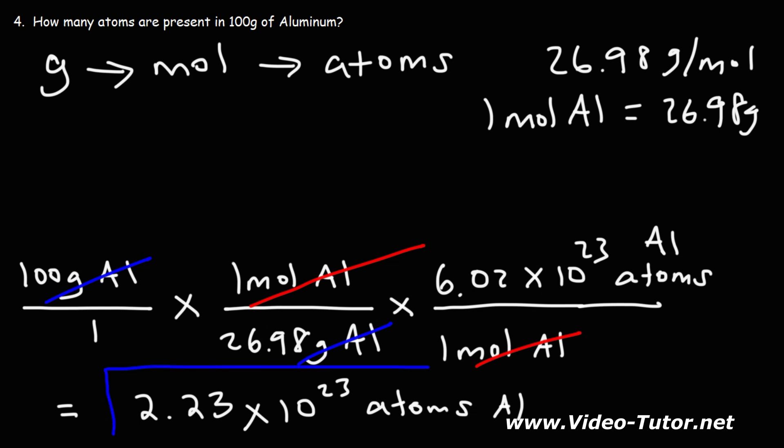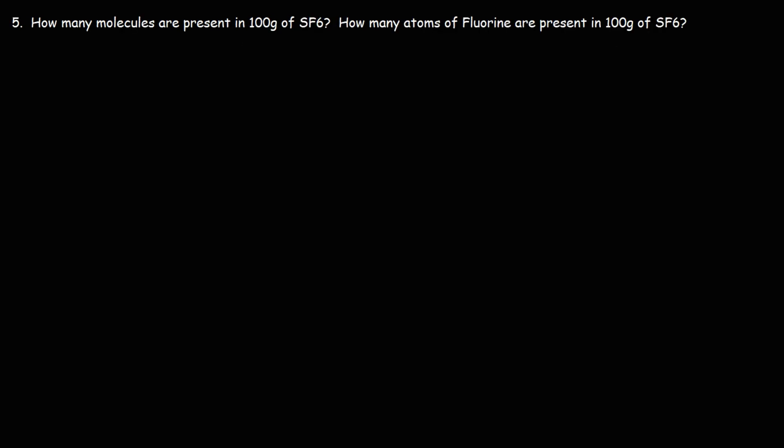So that's how you convert from grams to atoms. Number 5: how many molecules are present in 100 grams of sulfur hexafluoride, SF6? Then we'll answer the second part: how many atoms of fluorine are present in that same sample?